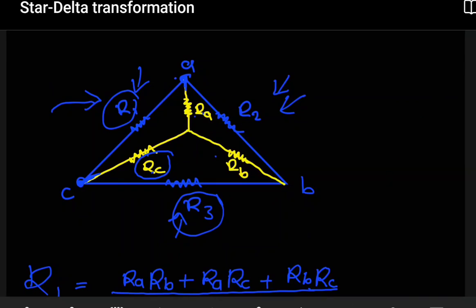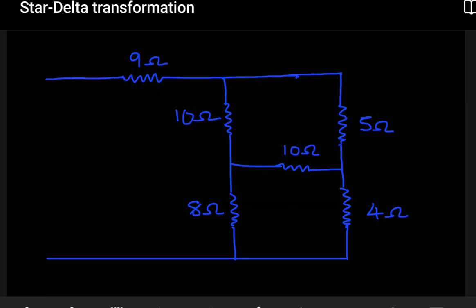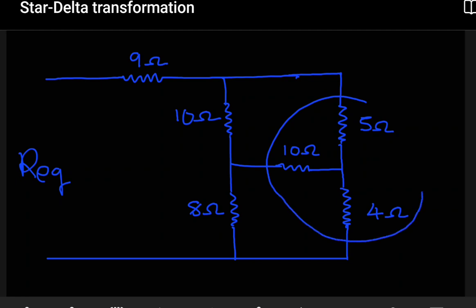Let's look at a simple example just to help us understand how we use these methods. In this example, we want to determine the equivalent resistance viewed from this end. The direct method of just using parallel and series connection will be difficult because how do you determine the behavior of these resistors here — are they in series or are they parallel? Because of that, we want to utilize what we've just described: the star being converted into a delta.